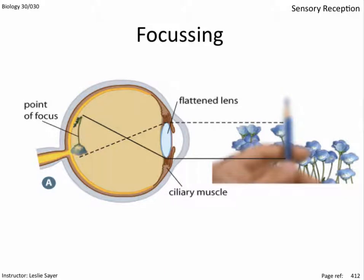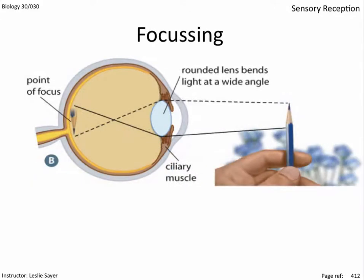Fishes focus their eyes by moving them forward and back, camera style. Humans focus by manipulating the flexible transparent protein that is the lens. To focus distant objects, the ciliary muscles relax, causing the lens to flatten. To focus on close-up objects, the ciliary muscles contract, causing the lens to become more rounded. The ability of the lens to change shape in order to focus is a reflex called accommodation.